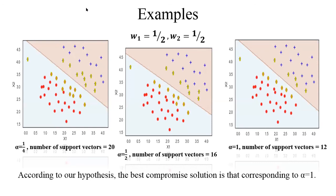We have three examples to test this model by taking the parameters w1 equal w2 equal one-half and changing the value of alpha. In the first example, we take alpha equal one-quarter. The result is the number of support vectors will be 20. When we increase the value of alpha, the number of support vectors will decrease. So according to our hypothesis, the best compromise solution is that corresponding to alpha equal one, which is shown in the last figure. Alpha equal one, number of support vectors decreased to 12.